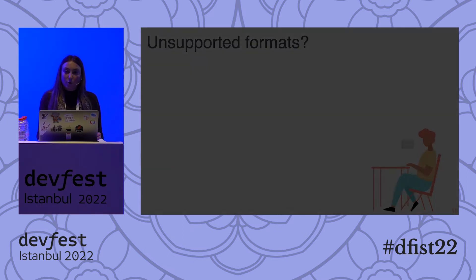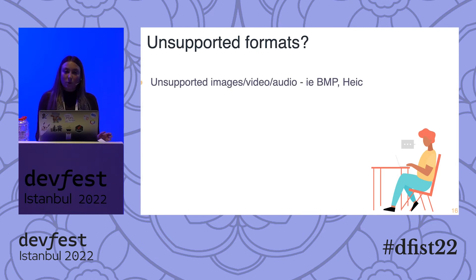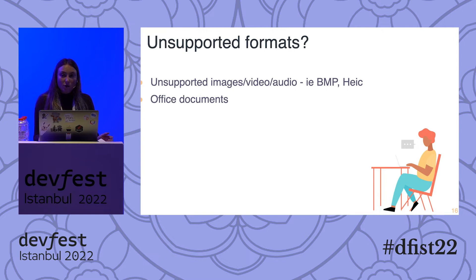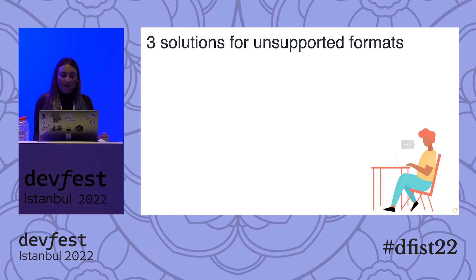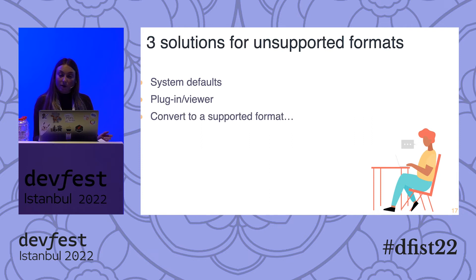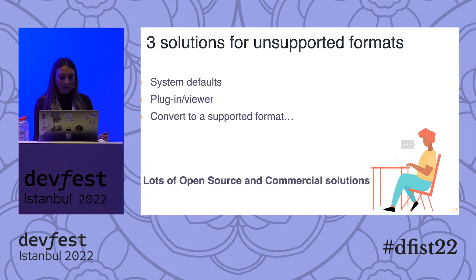So now let's move on to how to handle other formats. When you have unsupported images, videos, or audio, you just want to convert them to a format that is supported — for example, we would convert HIC to PNG. Office documents are a bit more complex as they have a multi-page layout, and this is also the case with PDF documents. However, most documents can be converted into PDF files, so if you can do it with PDF, you can do pretty much anything. The solutions for unsupported formats are: using system defaults, using a plugin or viewer, or converting to a supported format. There are also lots of open source and commercial solutions, which Mark will talk about.